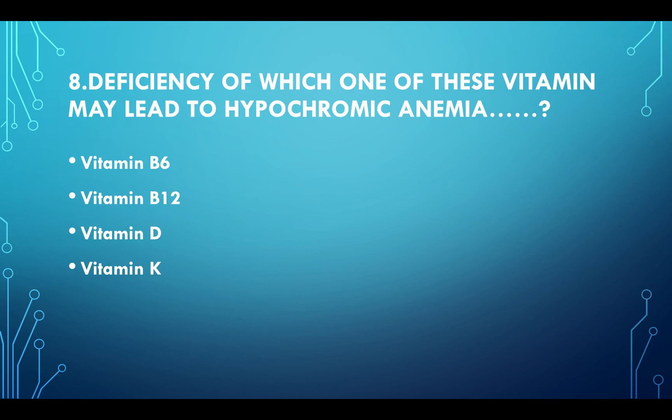Deficiency of which one of these vitamins may lead to hypochromic anemia? Option A: Vitamin B6. Option B: Vitamin B12. Option C: Vitamin D. Option D: Vitamin K. Answer: Option A, Vitamin B6.